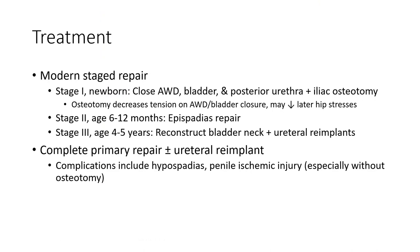Modern staged repair: Stage 1 — newborn closure of abdominal wall defect, bladder, and posterior urethra with iliac osteotomy. Osteotomy can decrease tension on the abdominal wall defect and bladder closure, and may decrease bladder outlet stress. Stage 2 — at 6 to 12 months, epispadias repair. Stage 3 — at 4 to 5 years, reconstruct bladder neck and bilateral ureteral re-implantation. Complete primary repair plus ureteral bilateral re-implantation. Complications include hypospadias and penile ischemic injury, especially without osteotomy.